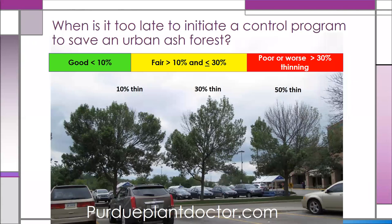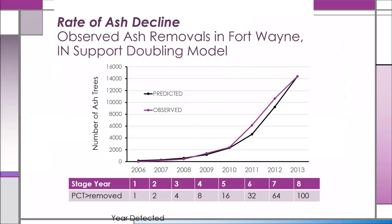One key question is: when is it too late to initiate a control program? We know you have a very good chance of protecting the tree when there's less than 10% canopy thinning, a reasonably good chance with up to 30% canopy thinning, but once you get above that the tree is too weak to save. We use a doubling model to predict the rate at which trees decline.